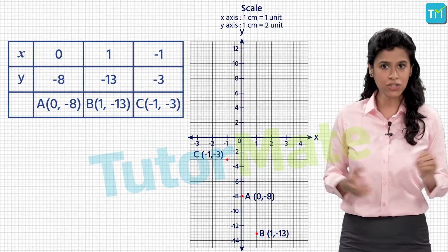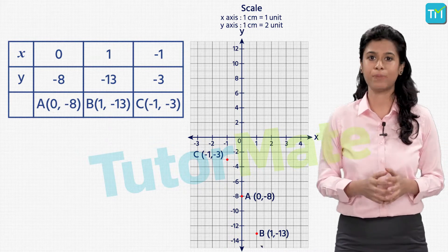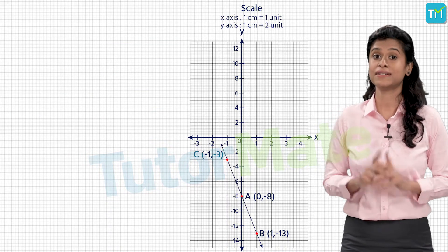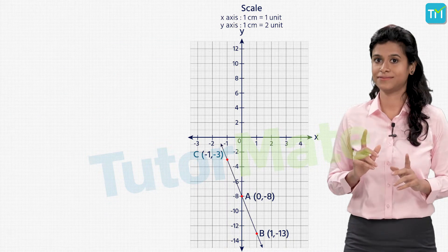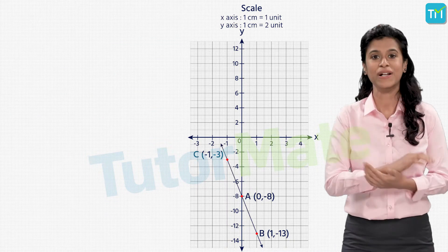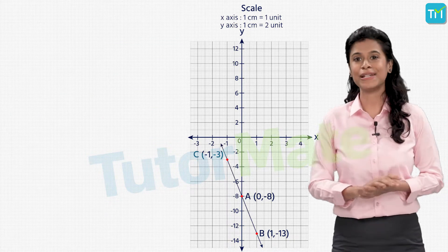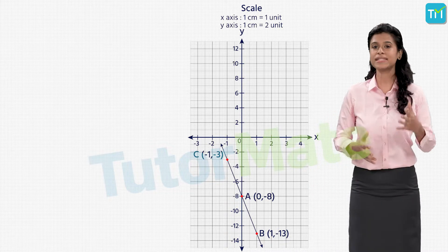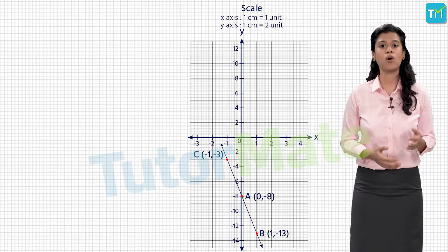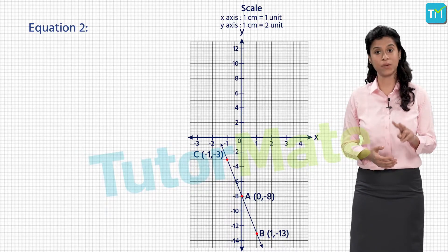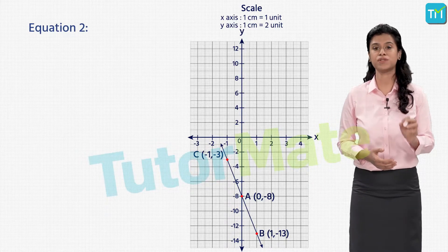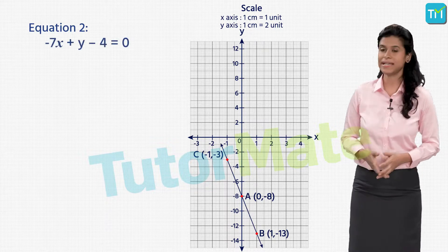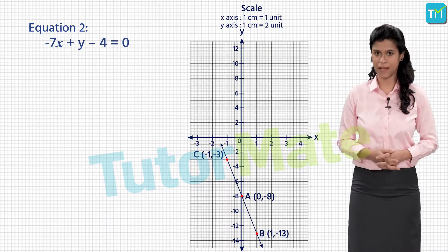When we join these three points they form a straight line. Let's extend it on both sides. With a similar approach, let's now move on to the second equation: minus 7x plus y minus 4 is equal to 0.